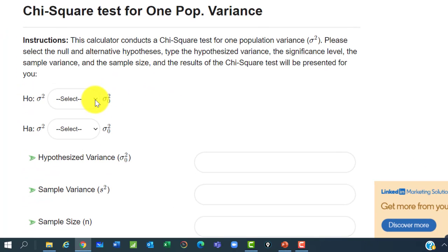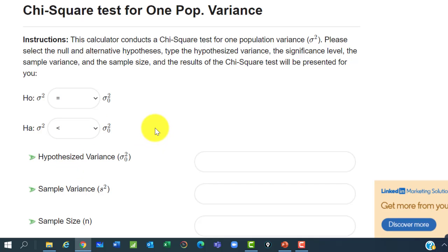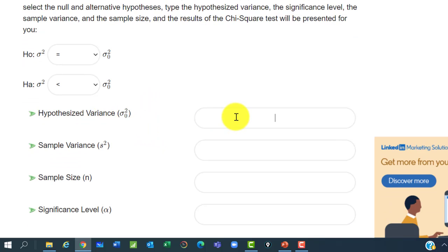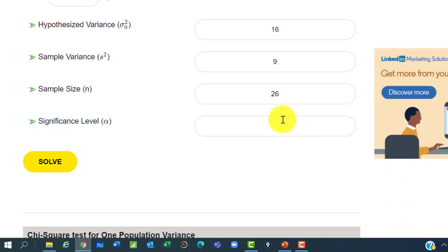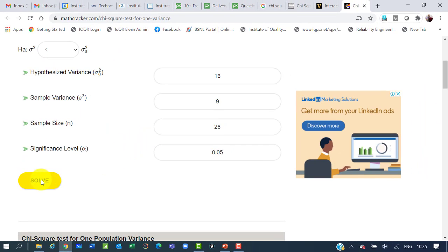First, specify the null hypothesis that is H₀: σ² = σ₀². Alternate hypothesis σ² < σ₀². Hypothesized variance σ₀² is 4² that is 16. Sample variance is 3² that is 9. Sample size is 26 pizza deliveries. Significance level is 0.05.